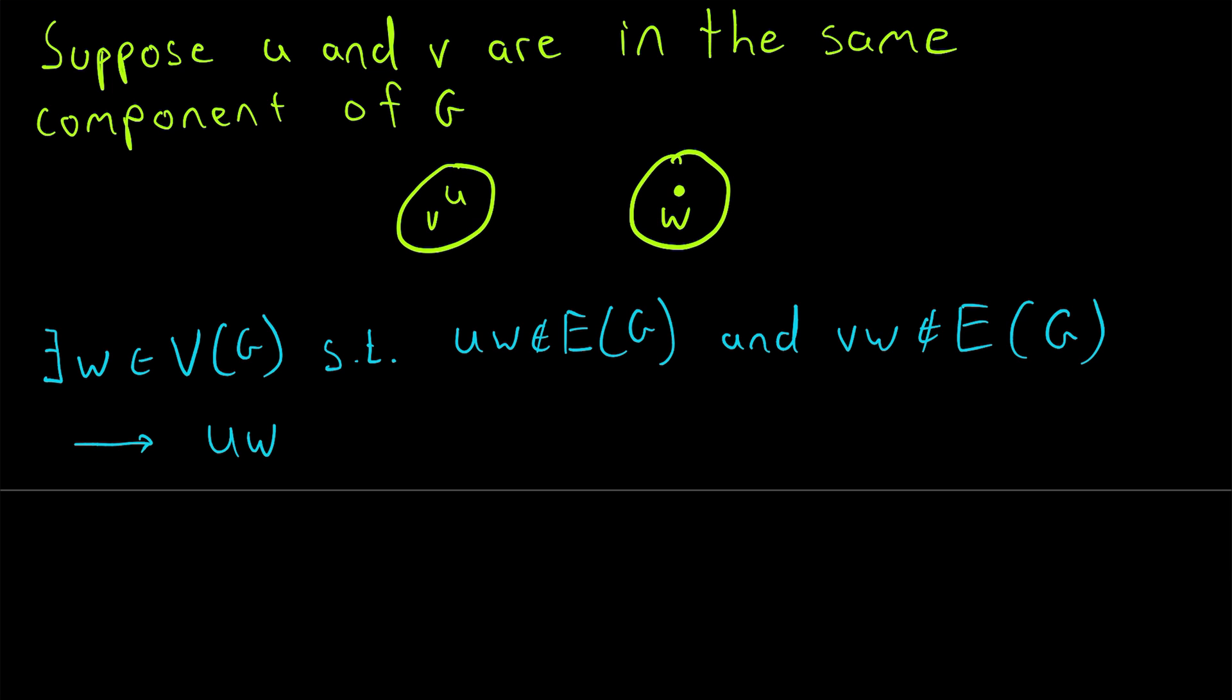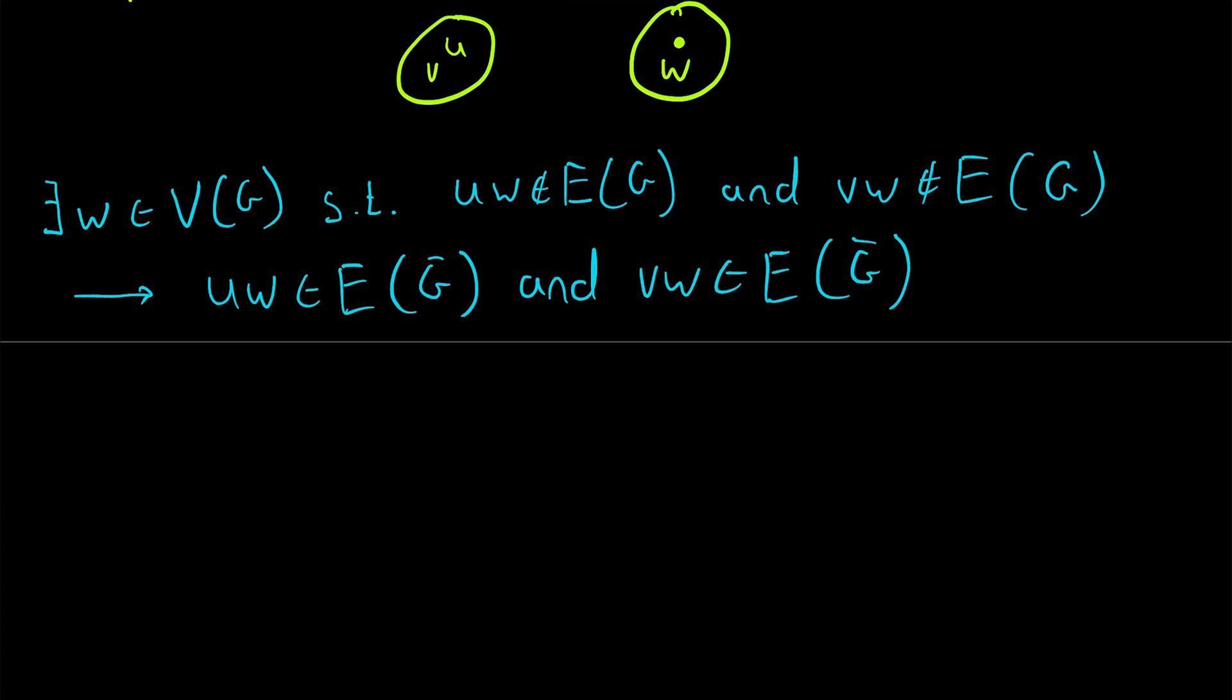This implies that U and W must be adjacent in G complement. So UW is an element of the edge set of G complement and similarly V and W must be adjacent in the edge set of G complement as well. And why does that matter to us? Well we've just shown that U and W are adjacent so there's some edge like that and V and W are adjacent so we've got an edge like that and oh look at that there we've got a path connecting U and V.